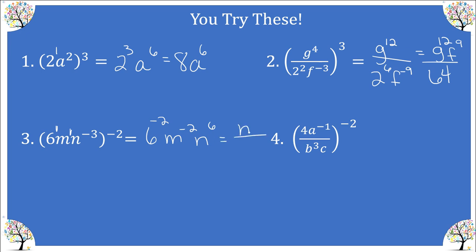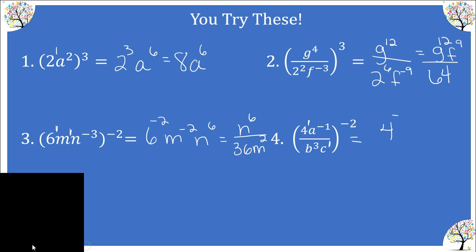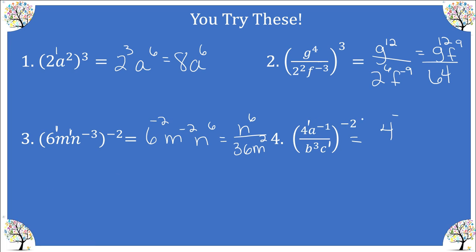Number three: writing in our understood exponents, we have six raised to the negative two, m raised to the negative two, and n raised to the positive six. N to the sixth stays in the numerator. For number four, let me write in those understood ones — actually, let me catch a mistake there. Negative two times one is negative two, so four to the negative two.